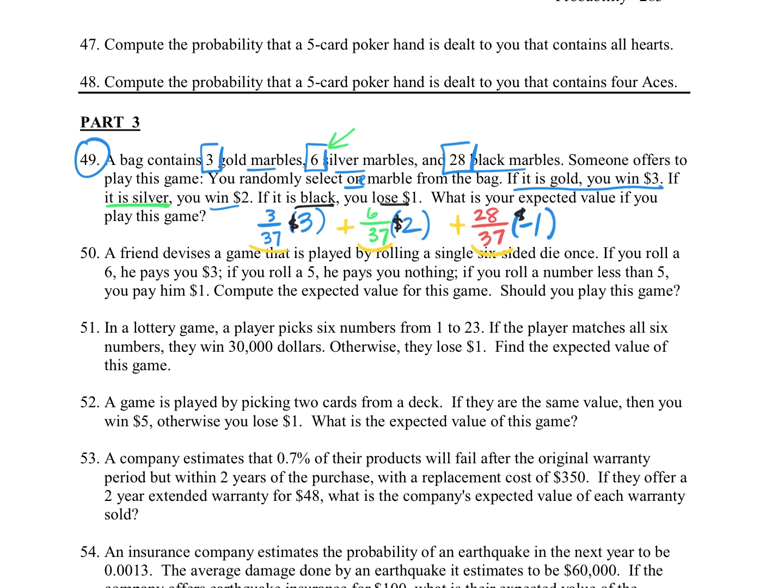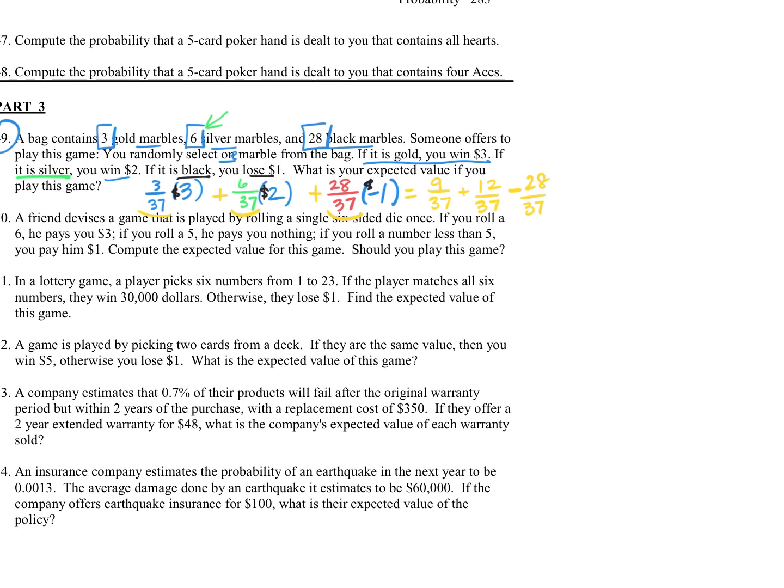We could put this in a calculator just as is, or if you start to simplify, our first fraction would become 9 over 37, plus 12 over 37, minus 28 out of 37. If we add our numerators together, we have 9 plus 12 is 21, minus 28 would be negative 7 out of 37. If you enter that in a calculator, it's going to be about negative $0.19, which means that we are going to be losing that amount.